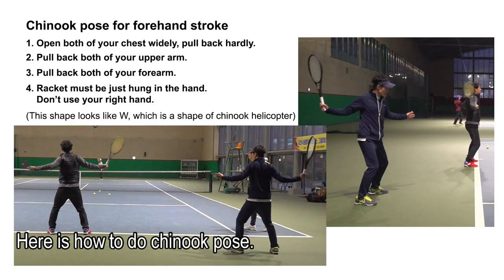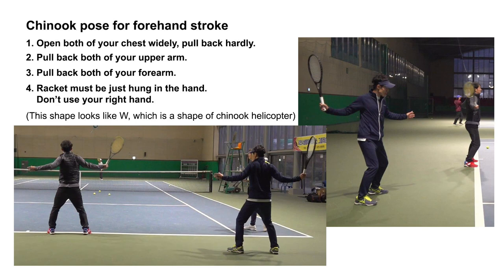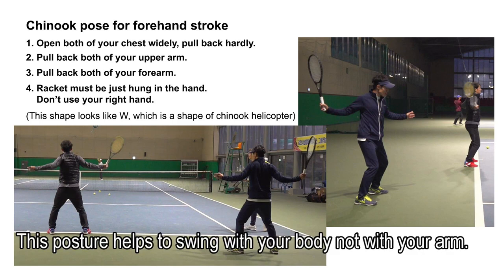Here is how to do the Chinook pose. First, open your chest widely and pull back hard. Second, pull back your upper arm. Third, pull back your forearm. Lastly, the racket must be just hung in the hand — don't use your right hand. This posture helps to swing with your body, not with your arm.